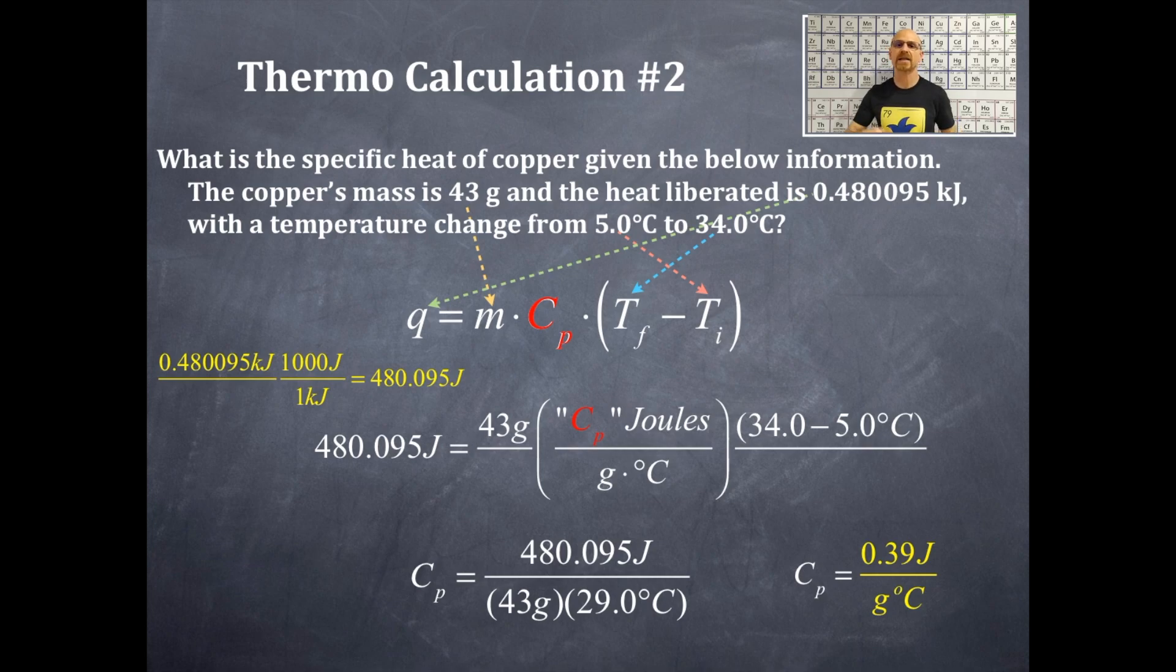Whereas a very dense metal like gold or lead has a very low specific heat of 0.1 joules per gram degree Celsius. So make sure you keep that in mind. Now aluminum is very low in density. Gold is very high in density.